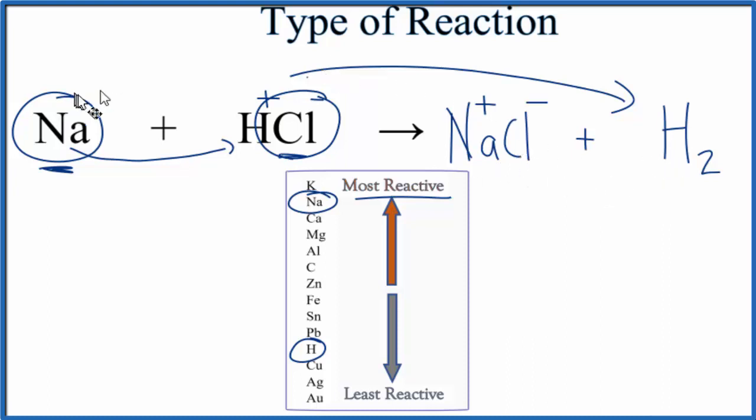Note that the reaction doesn't go back this way. The hydrogen can't replace the sodium because the hydrogen is below sodium on the activity series. This is Dr. B with the type of reaction for Na plus HCl. Well, thanks for watchin'.